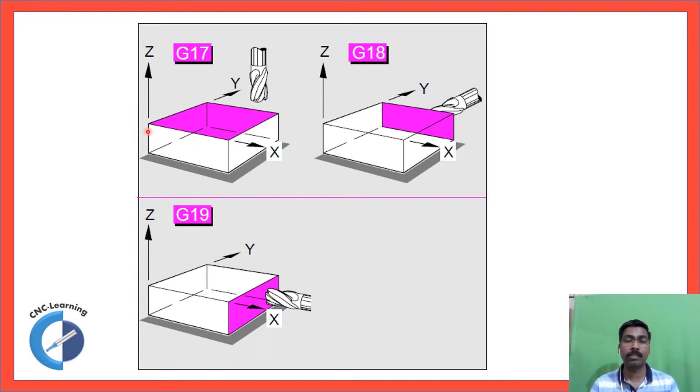Now this is for a VMC. You know how the axis nomenclature is. So horizontal axis is X, then the opposite axis is Y, the spindle axis is Z. So whenever you are working on XY plane, so commonly when you work on a VMC, you will be working on XY plane and the infeed will be in Z axis. So this plane will be G17. The code for XY plane is G17.